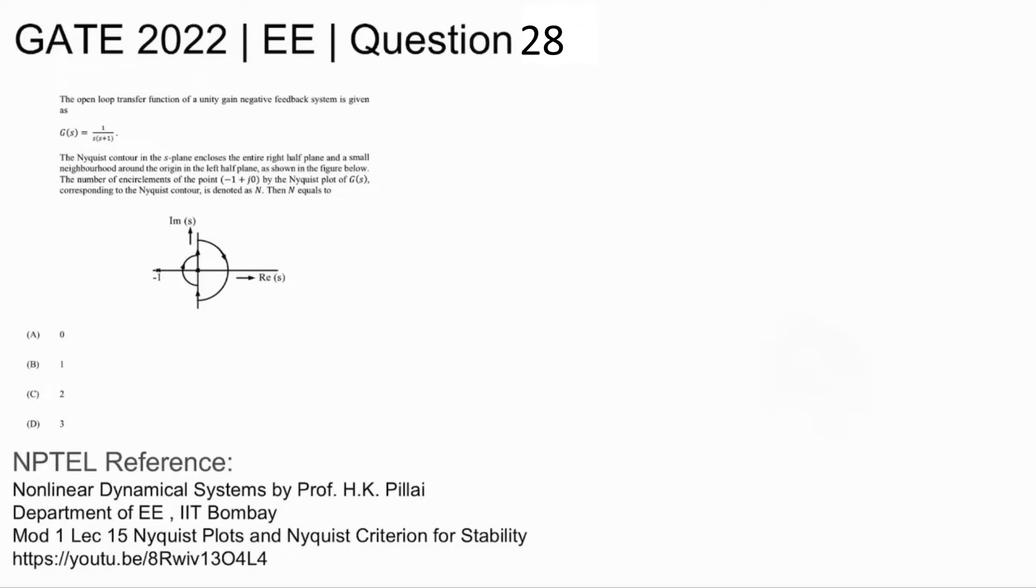The open loop transfer function of a unity gain negative feedback system is given as G(s) equal to 1 by s into s plus 1. The Nyquist contour in the s-plane encloses the entire right half plane and a small neighborhood around the origin in the left half plane as shown in the figure below.